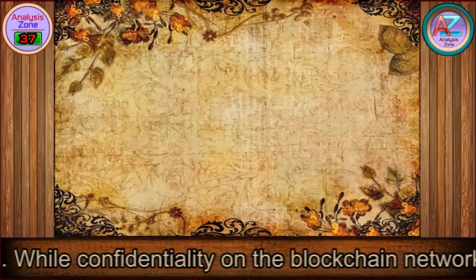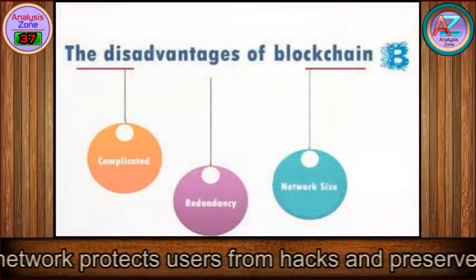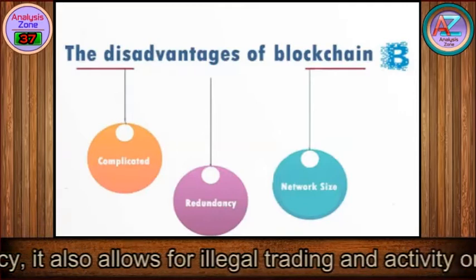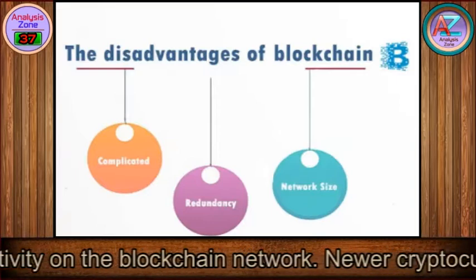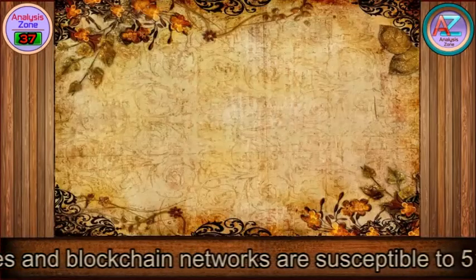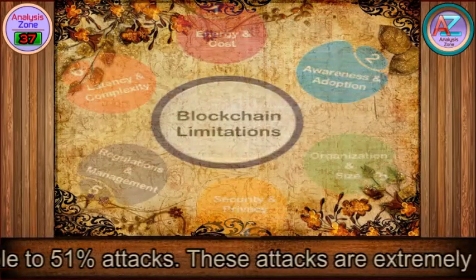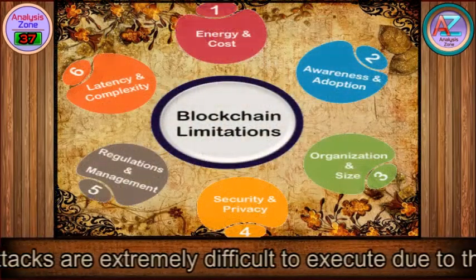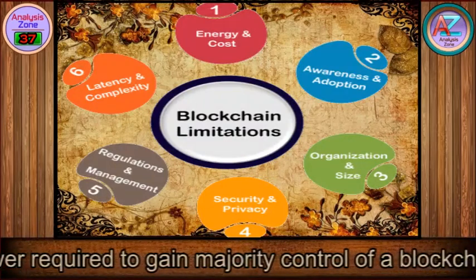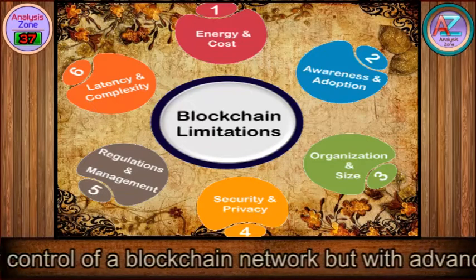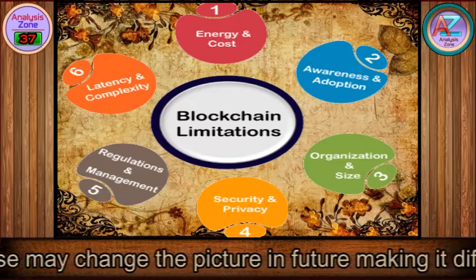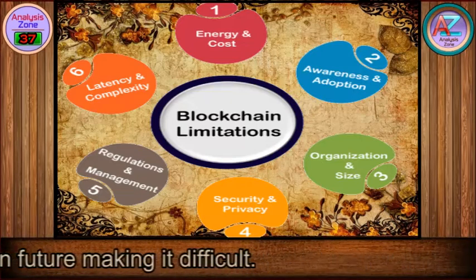While confidentiality on the blockchain network protects users from hacks and preserves privacy, it also allows for illegal trading and activity on the network. Newer cryptocurrencies and blockchain networks are susceptible to 51% attacks. These attacks are extremely difficult to execute due to the computational power required to gain majority control of a blockchain network, but advanced technology available on lease may change the picture in future.